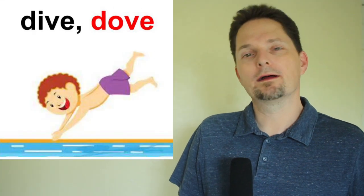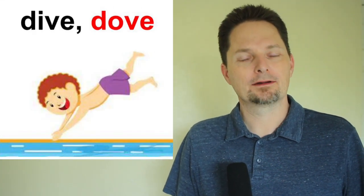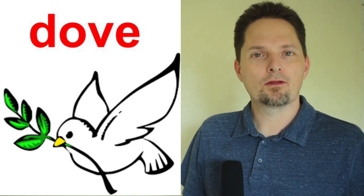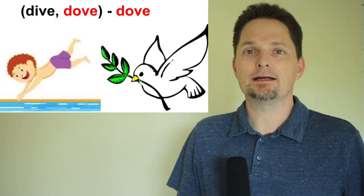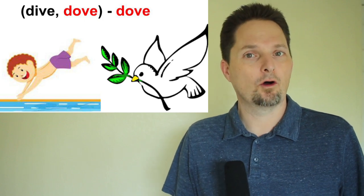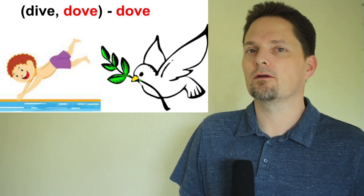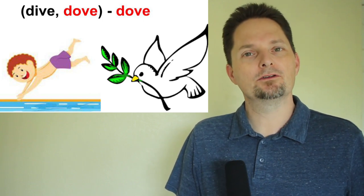Very good. Now we see the word dove in the past — remember, in the present: dive; in the past: dove. Well, we see the same letters spelling dove. D-O-V-E spells dove, the white pigeon, the white bird. So when you see D-O-V-E, it can be dove, the past of dive, and it can be dove, the white bird. It depends on the usage. So remember, the white bird is a dove.